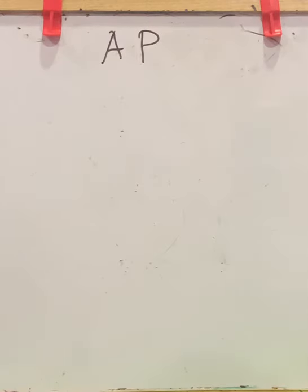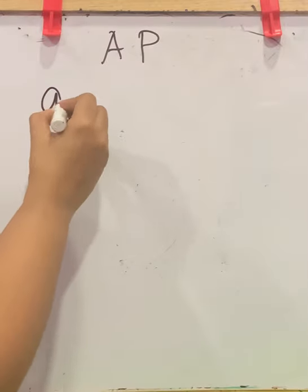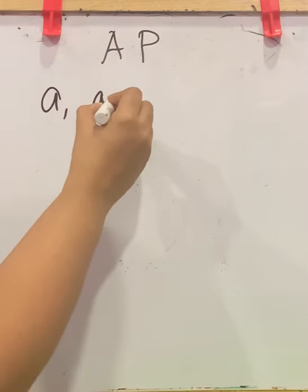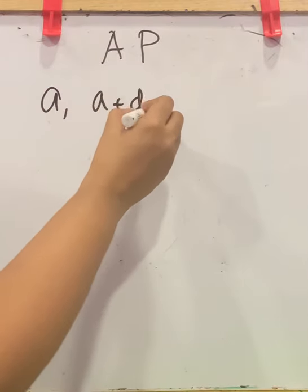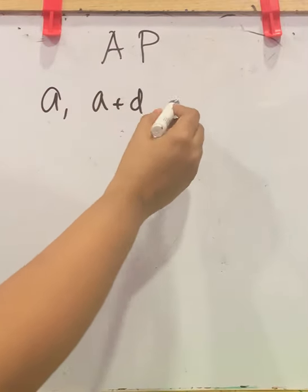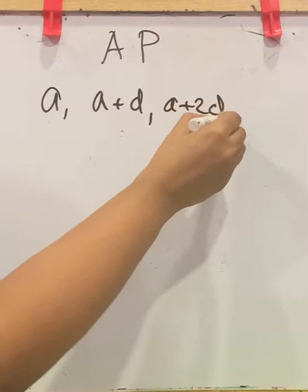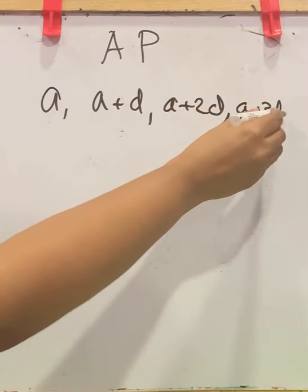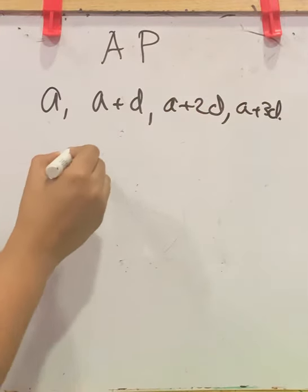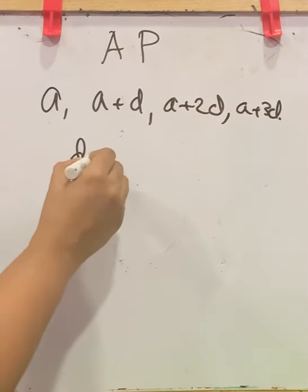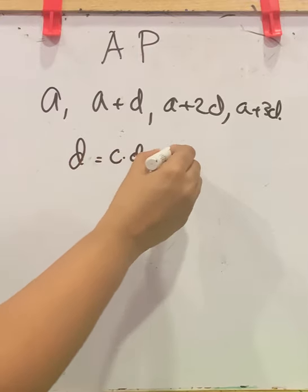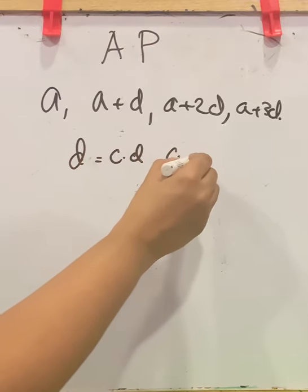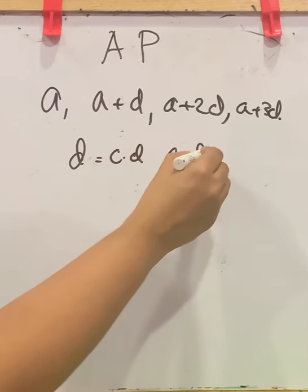Now let us check what is the general form of an AP. So here it will be: A, A plus D, A plus 2D, A plus 3D, and so on. Here D is the common difference and A is the first term.